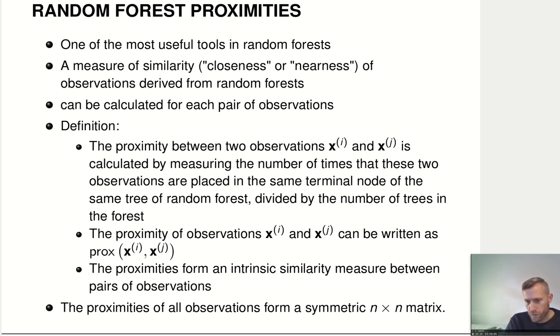We write that as prox xi, xj. That's like an inverse distance. And that gives us a similarity measure. And it gives us a fairly special similarity measure because this is a similarity measure in terms of basically how similar these observations are for classifying or predicting a certain thing.